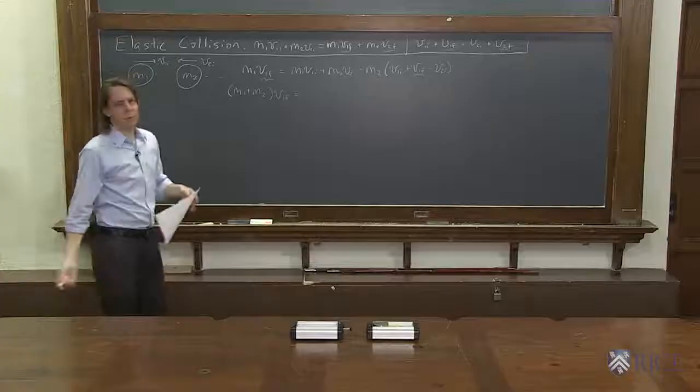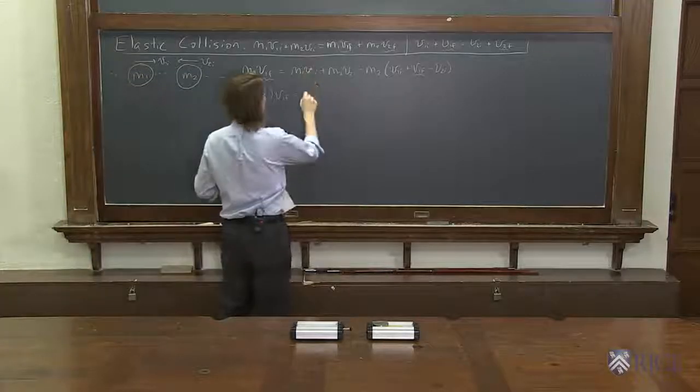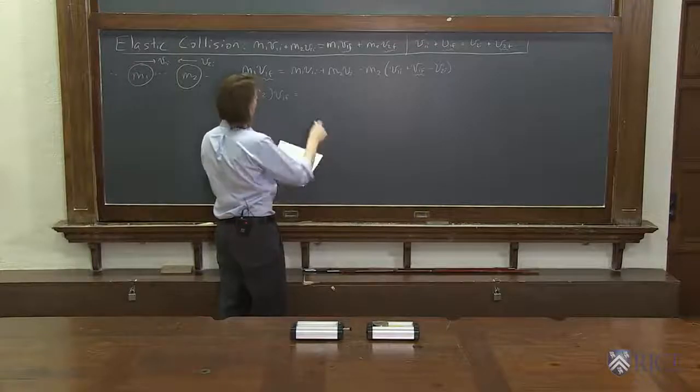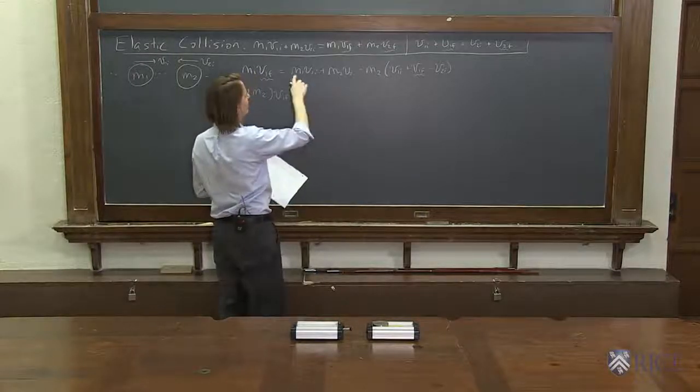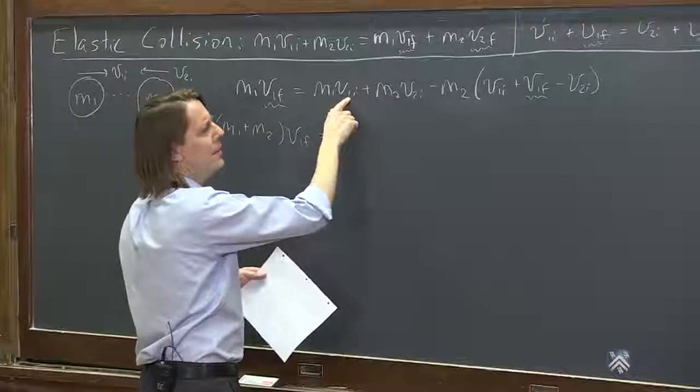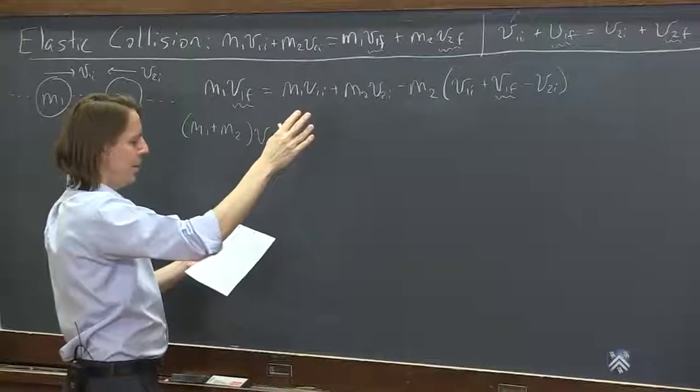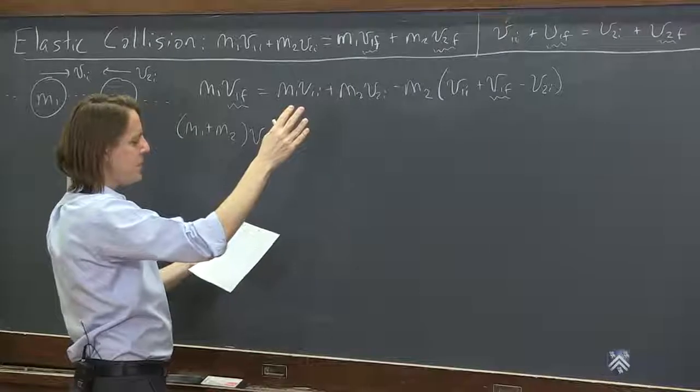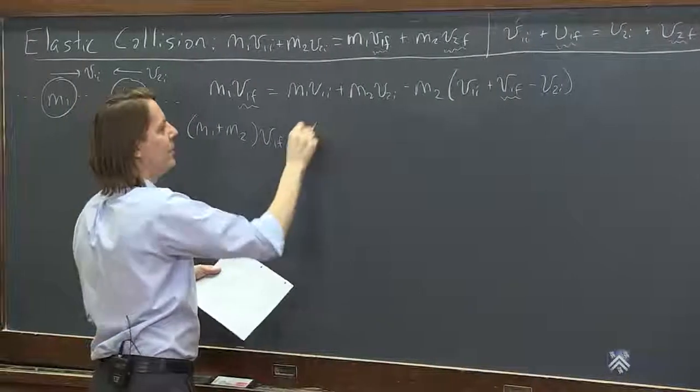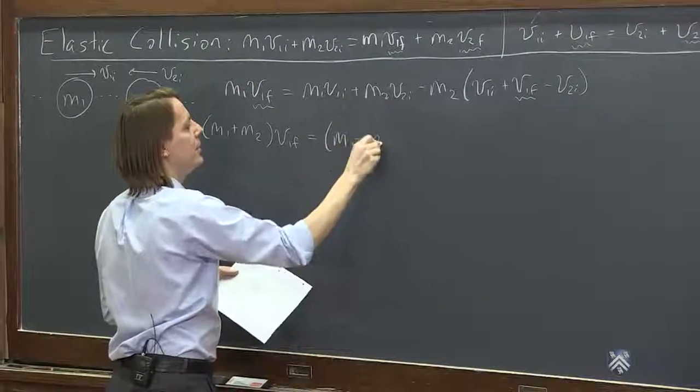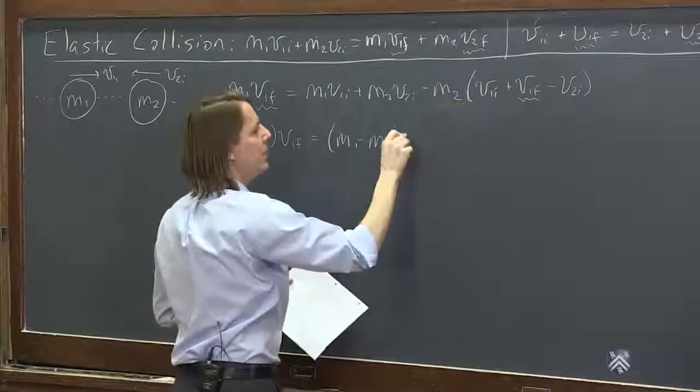All right, let's just see what we have left over. We have, what do we want to do with what's left over? Let's start separating things. We have M1 V1i, and we have minus M2 V1i. So let's go ahead and pull our M1 minus M2 out of that. M1 minus M2 V1i.